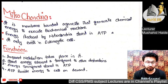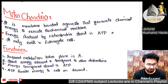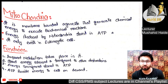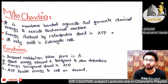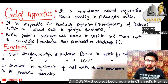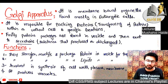The functions of mitochondria: first, important metabolic reactions take place in it. Second, stored energy is released and transferred to other destinations. Third, energy is stored in ATP — ATP provides energy to the cell on demand. Energy stored in mitochondria is transferred from one place to another as needed.